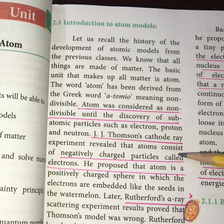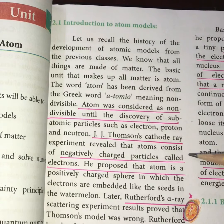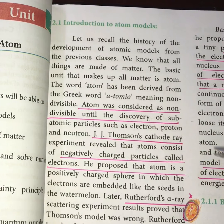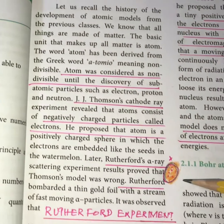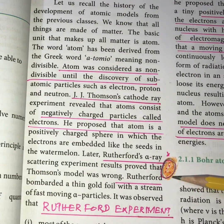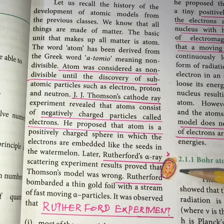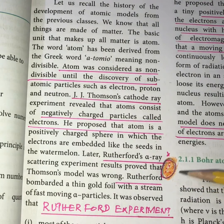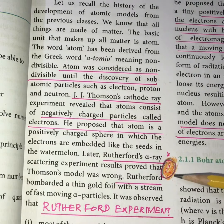J.J. Thomson's cathode experiment proved and revealed that an atom consists of a negatively charged particle called electron and a positively charged particle called proton. According to J.J. Thomson, an atom consists of a positive sphere where electrons are embedded in that positive sphere, like seeds present in a watermelon.